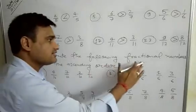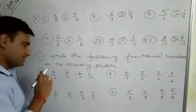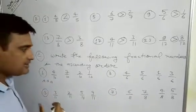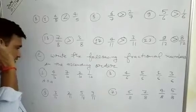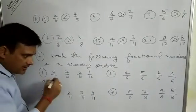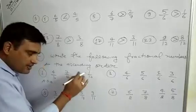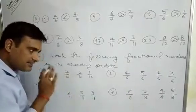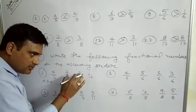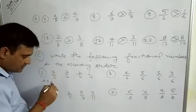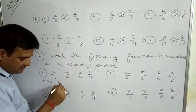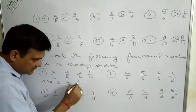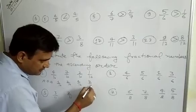Now in Part C, write the following fractional numbers in ascending order. In ascending order, we write the smallest number first and the greatest number last. Since the denominator is the same, we compare the numerators only. Here, 1 is less than 2, 2 is less than 4, and 4 is less than 7. So we write: 1 by 10, then 2 by 10, then 4 by 10, then 7 by 10.